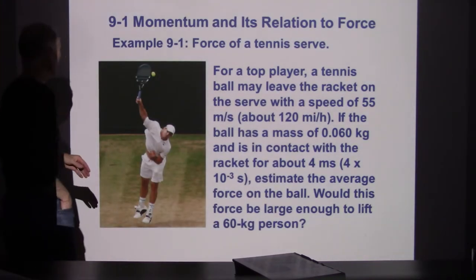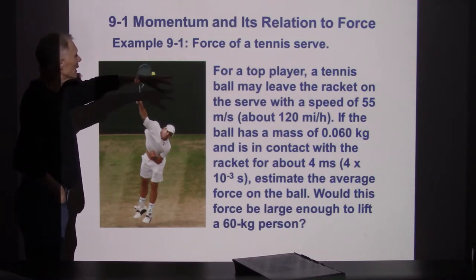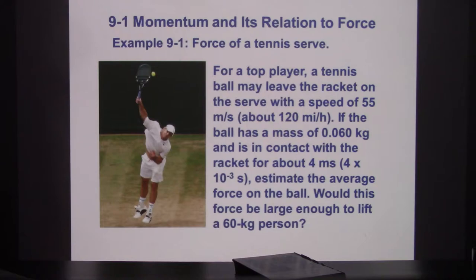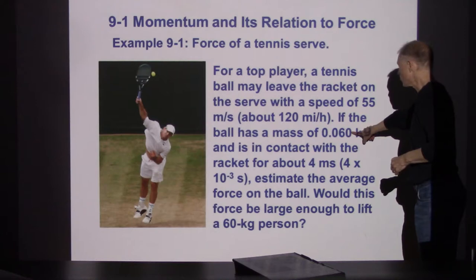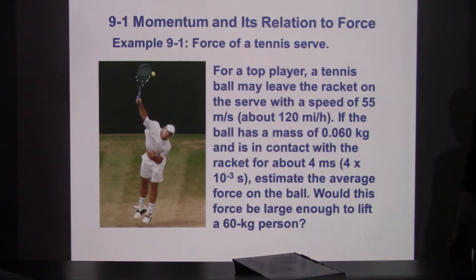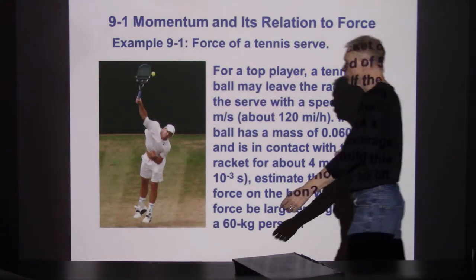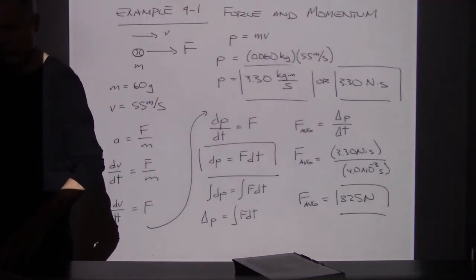Here is a tennis player hitting a tennis ball. The ball leaves the racket at about 55 meters per second, or about 120 miles an hour. If the tennis ball has a mass of 60 grams and is in contact with the racket for four milliseconds — four thousandths of a second — estimate the force acting on the ball. Would this be a large enough force to lift a person?